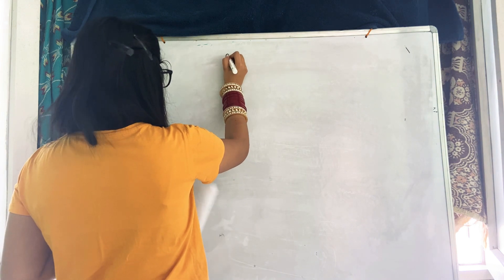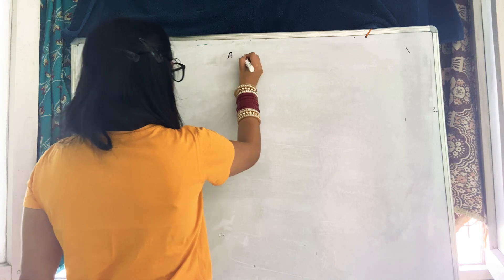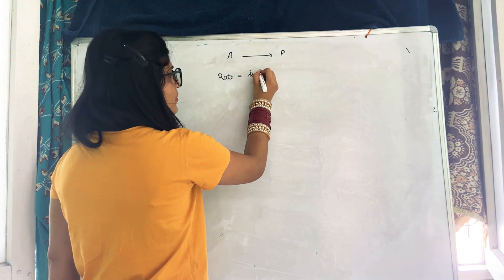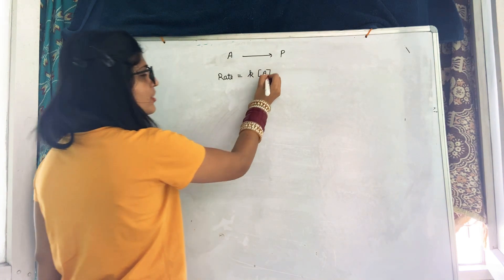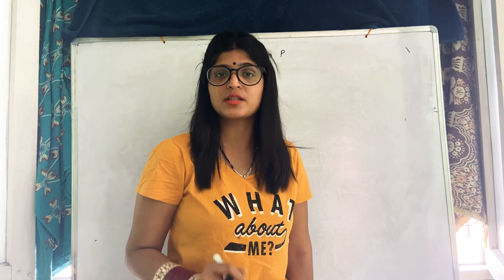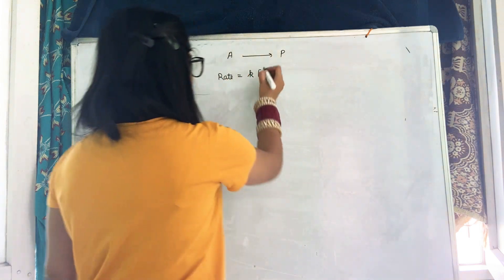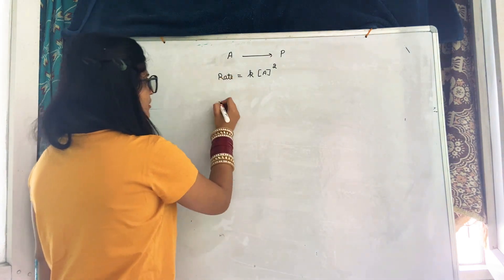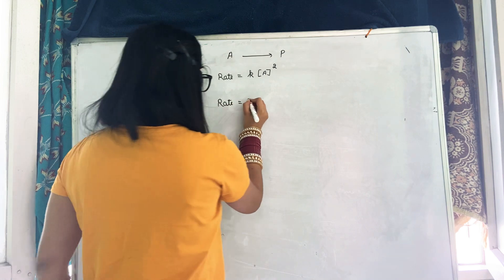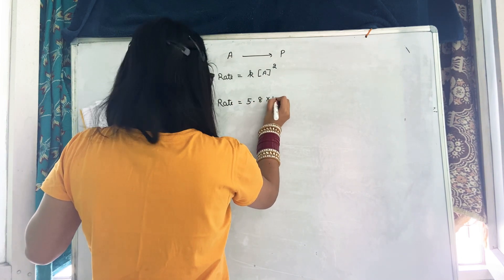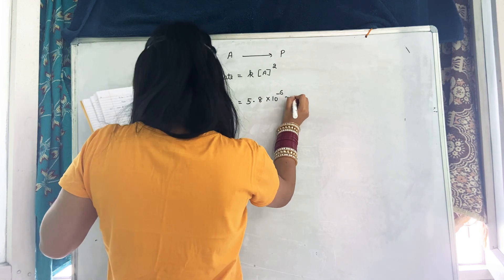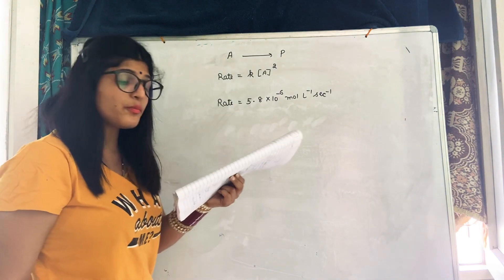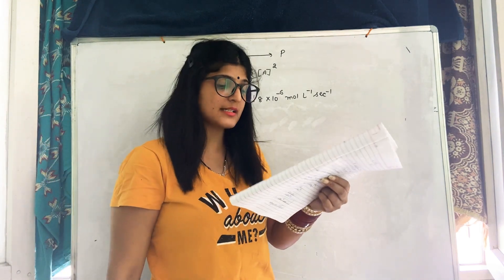First we write the reaction. Rate is equal to k times [A] squared, since this is a second order reaction. The rate of reaction given is 5.8 into 10 raised to minus 6 mole per liter per second, at 0.01 mole per liter monomer concentration.